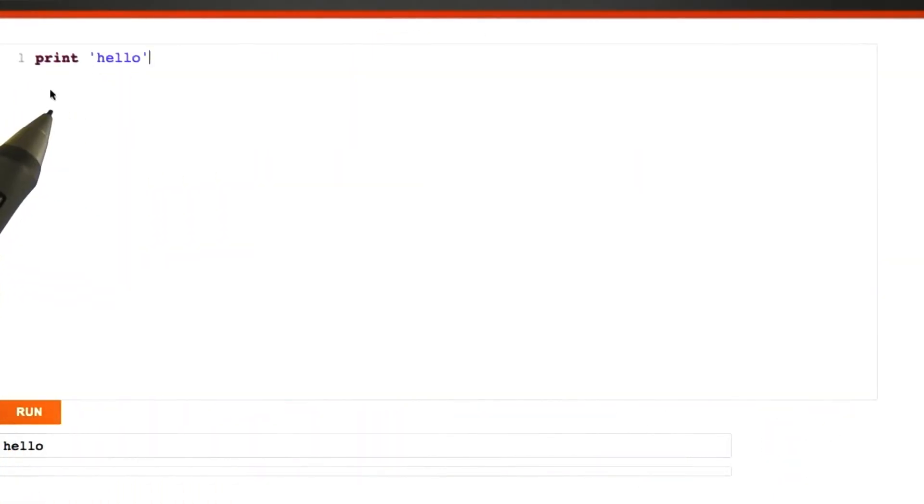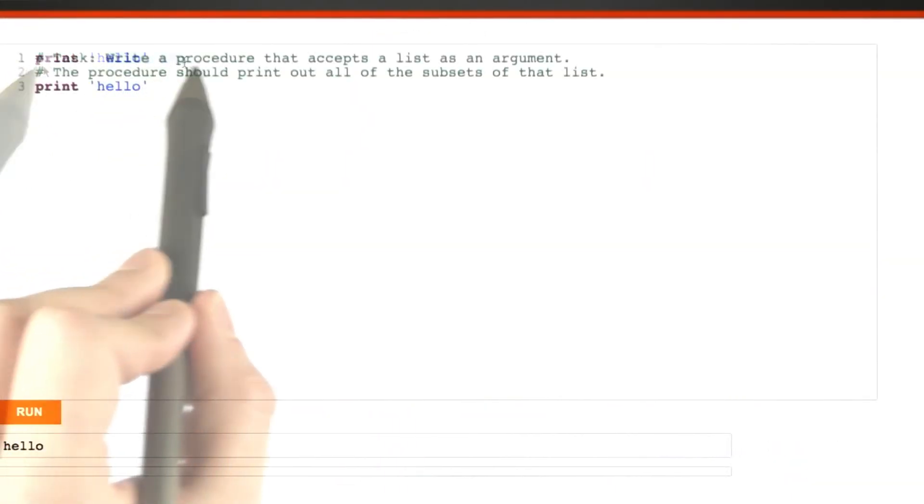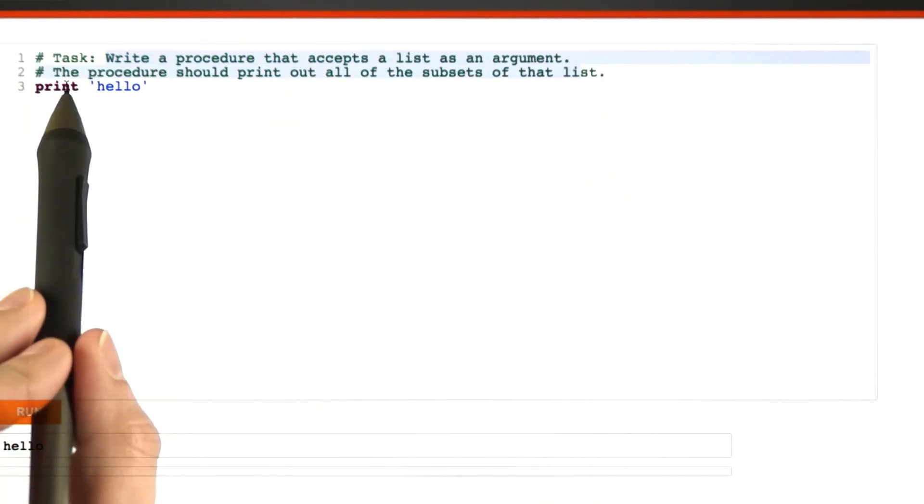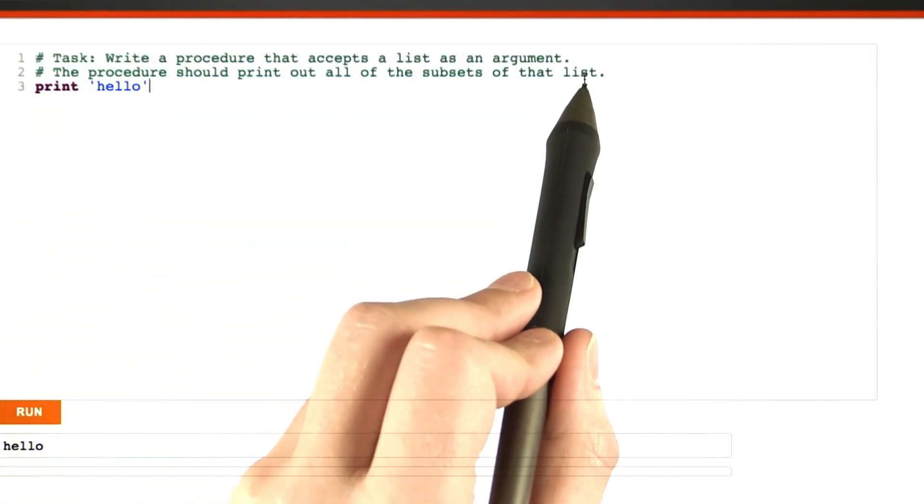All right, so here we are in the interpreter, the integrated development environment. We're going to write a procedure that accepts a list as an argument, and then prints out all the subsets of that list.